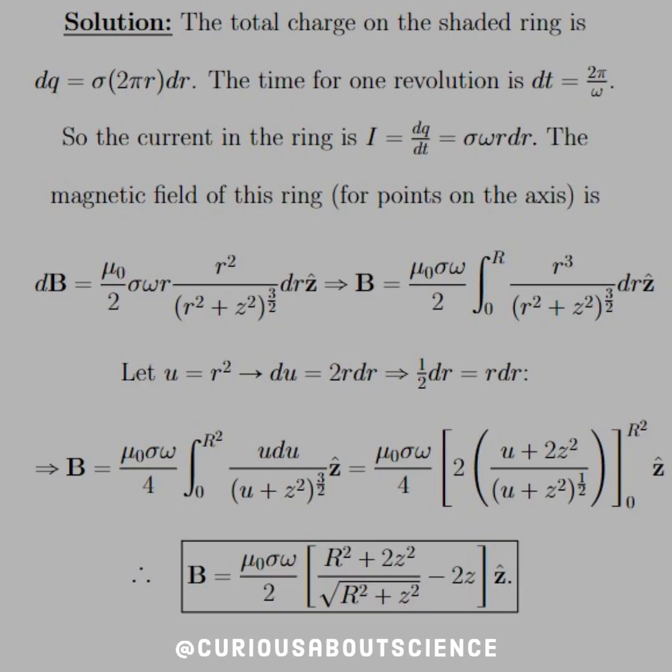All right, so the total charge on the shaded ring is dq equals sigma times 2 pi r dr. The time for one revolution dt is just 2 pi over omega. Good to go there. So the current is the quotient of these, which gets rid of the factor of 2 pi and puts an omega there.